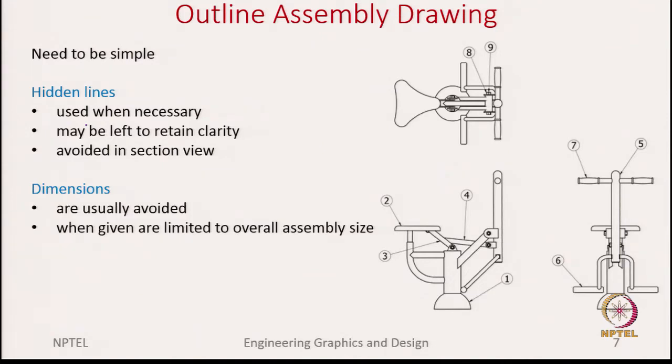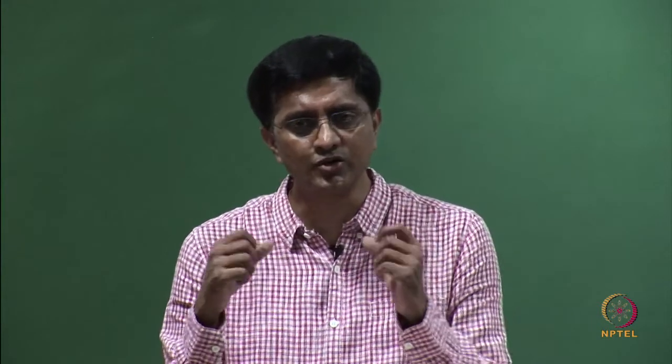Regarding dimensioning, it should generally be avoided so as not to complicate the drawing and make it difficult to read. But sometimes you still go ahead and add dimensions, especially when you want to show the overall dimensions of the assembly or the distance between a few critical parts. Those are details you cannot show in a detail drawing — overall dimensions of the assembly or relative distances between parts cannot be shown there. So in particular instances you show those dimensions in an assembly, but otherwise whatever you can show in the detail drawing, avoid it in an assembly drawing.